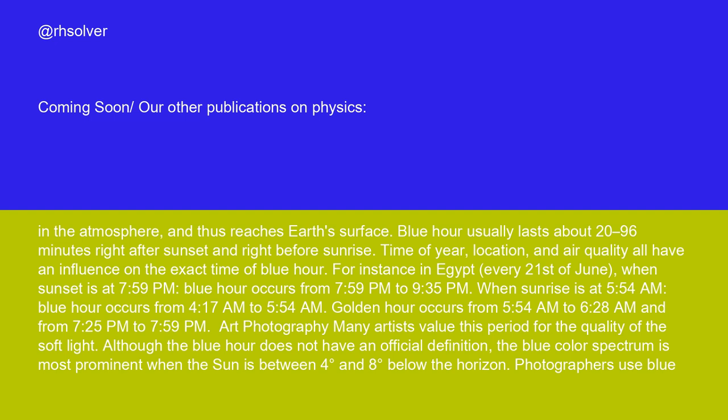For instance, in Egypt, every 21st of June, when sunset is at 7:59 p.m., blue hour occurs from 7:59 p.m. to 9:35 p.m. When sunrise is at 5:54 a.m., blue hour occurs from 4:17 a.m. to 5:54 a.m.